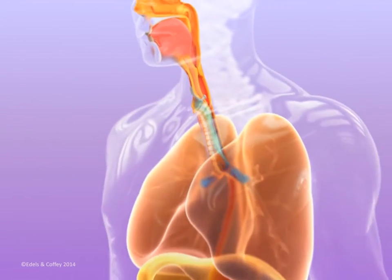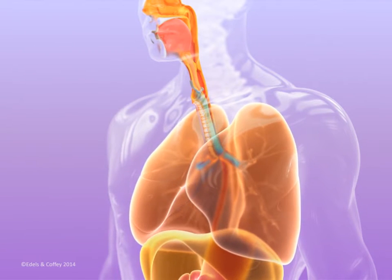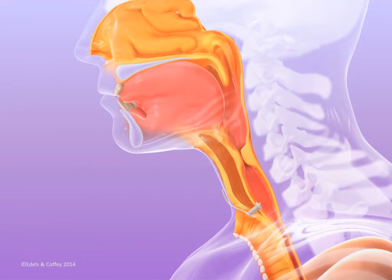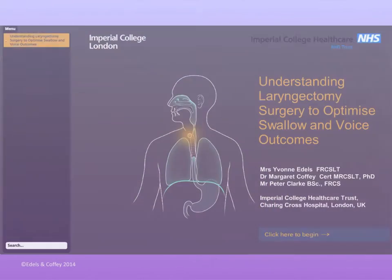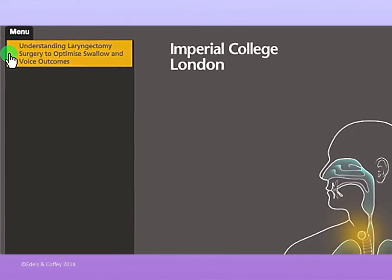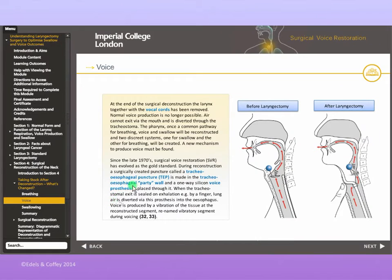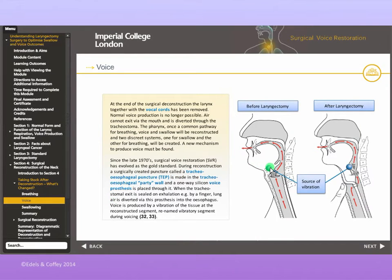Understanding Laryngectomy Surgery to optimise swallow and voice outcomes is a new interactive e-learning module designed to be accessible to a broad spectrum of professionals. Navigating the module is easy using the menu bar, which can be expanded or collapsed. Words highlighted in blue and map pins denote pop-ups with additional information.